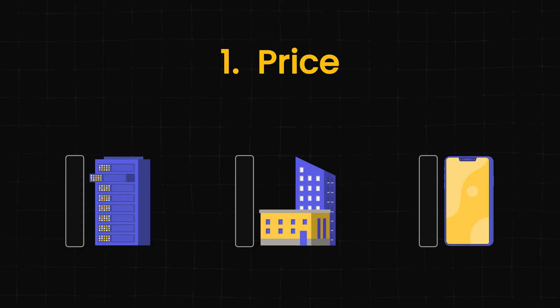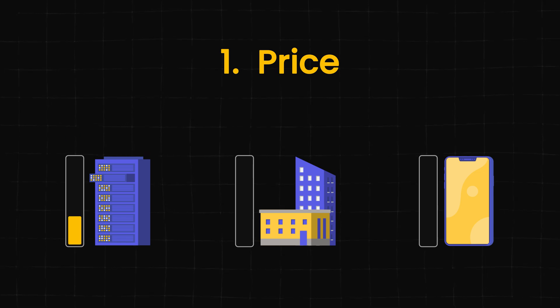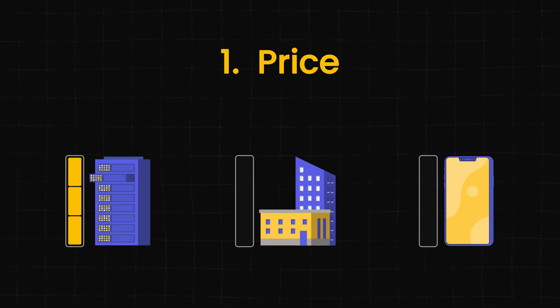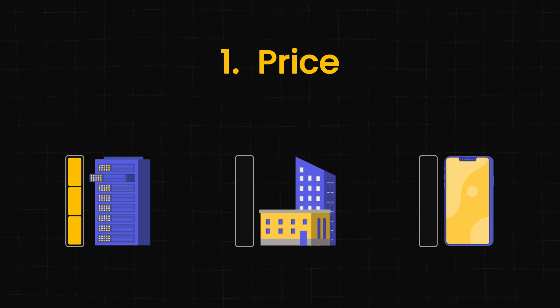Let's cover price. Data center proxies are the most affordable option because there's just so many of them — by paying per gigabyte, you get access to many proxies around the world, great for anyone who needs high volume without spending a lot. Residential proxies are more expensive since the IPs need to be sourced from real households, and the usual per-gigabyte model can get pricey if you're going through a lot of data.